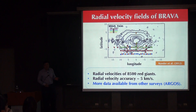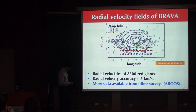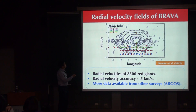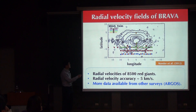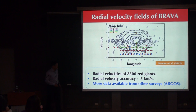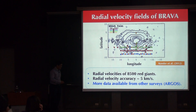What do we observe for these stars? For each field, we can use the Doppler effect to measure the line-of-sight velocity of stars. For the BRAVA survey, championed by Mike Rich from UCLA, they observe about 8,500 red giant stars in several fields: three strips in terms of longitudes and one strip along the minor axis of the bar in terms of latitude. For each star, they can measure its velocity through the Doppler effect, with an accuracy of about 5 km per second.